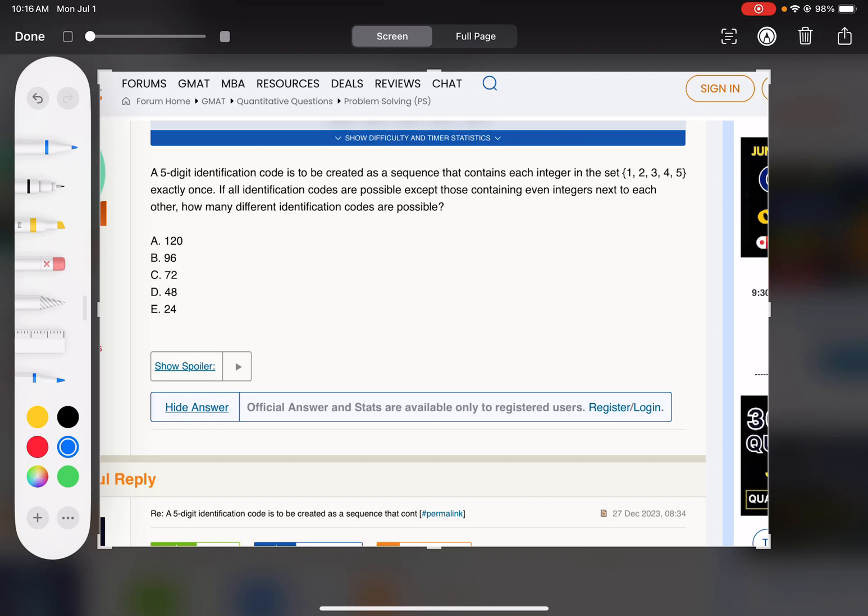Okay, so we can't have even integers next to each other. Good thing there's only two even integers, so that actually makes this easy. It's gonna be really easy just to do total minus where the even integers are next to each other. So this is just like one of those total minus, where two people are not supposed to stand next to each other, we do total minus where they are next to each other.